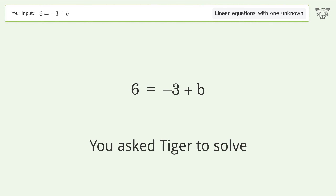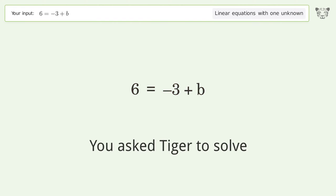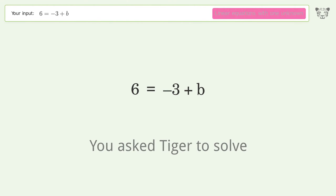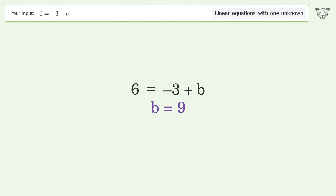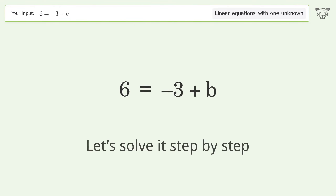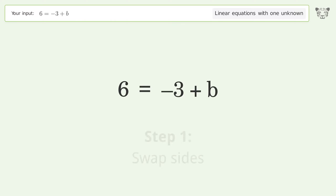You asked Tiger to solve this — it deals with linear equations with one unknown. The final result is b equals 9. Let's solve it step by step: swap sides.